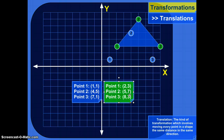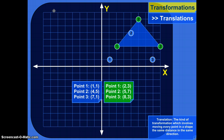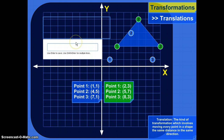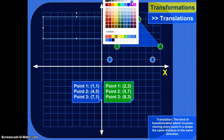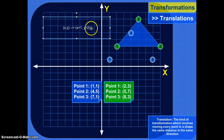That way we know all the points moved in the same direction. So if I want to tell my math buddies what happened here without showing all these pictures, I could write it in notation like this: take all your x's and y's, shift the x's by 1 and shift the y's up by 2.